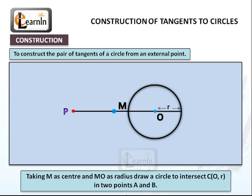Taking M as the center and MO as a radius, draw a circle to intersect C(O,r) in two points A and B.